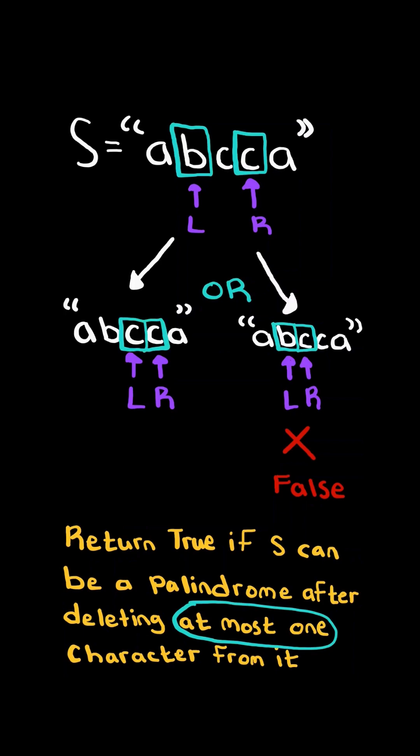Now, consider the first case where the characters at the L and R pointers are equal. In this case, we continue the algorithm and advance L by one, and decrement R by one. When L and R cross each other, we stop the algorithm and we return true.